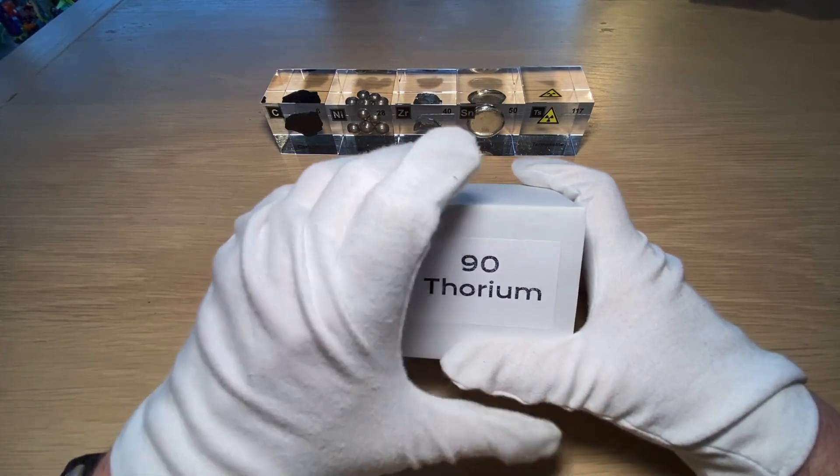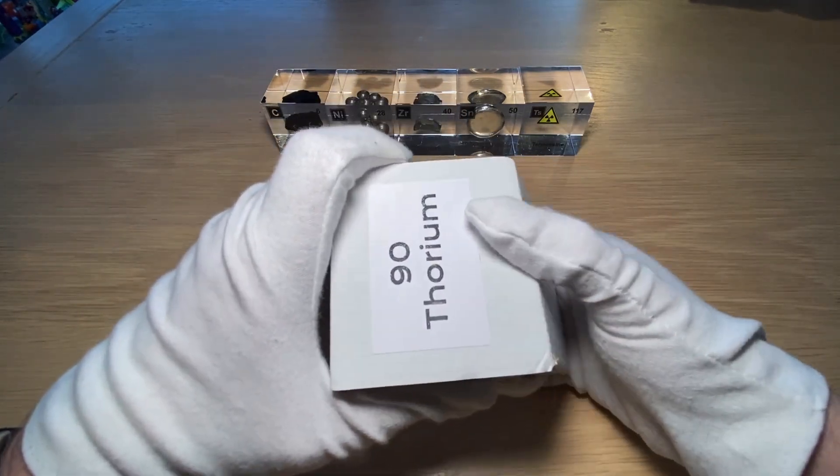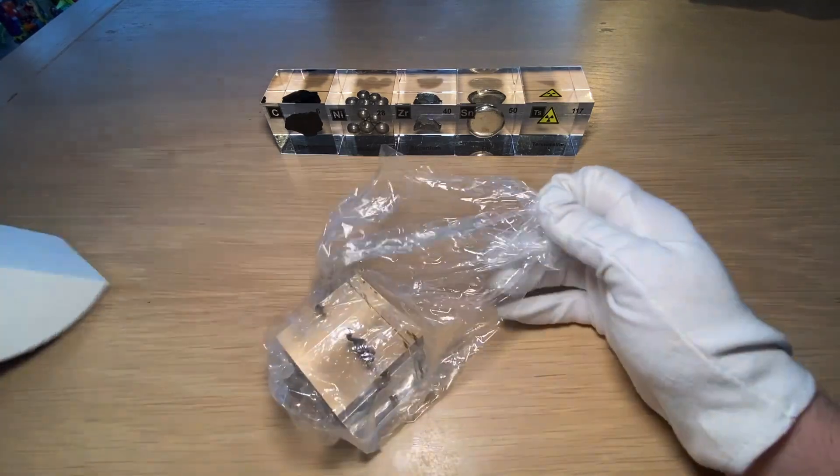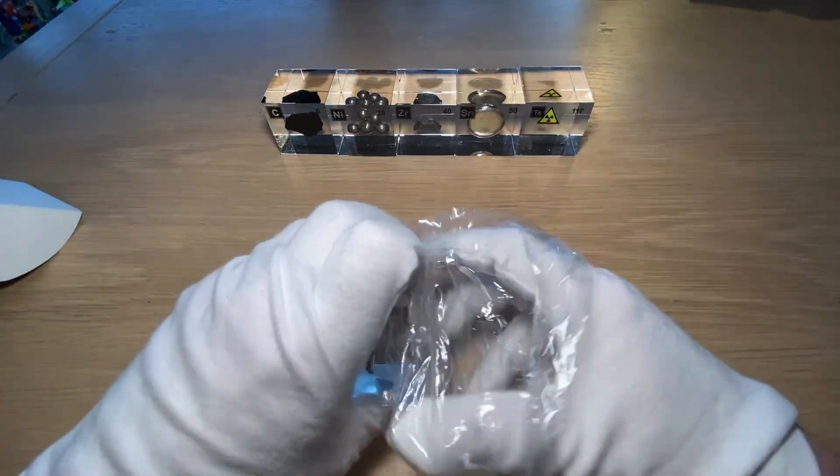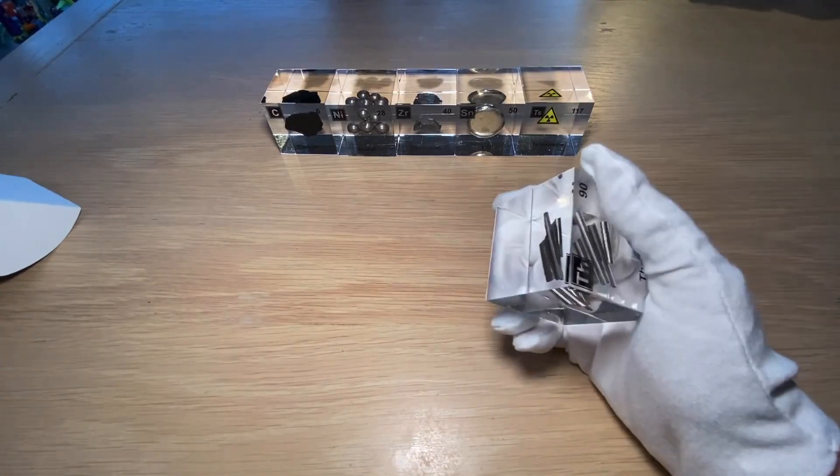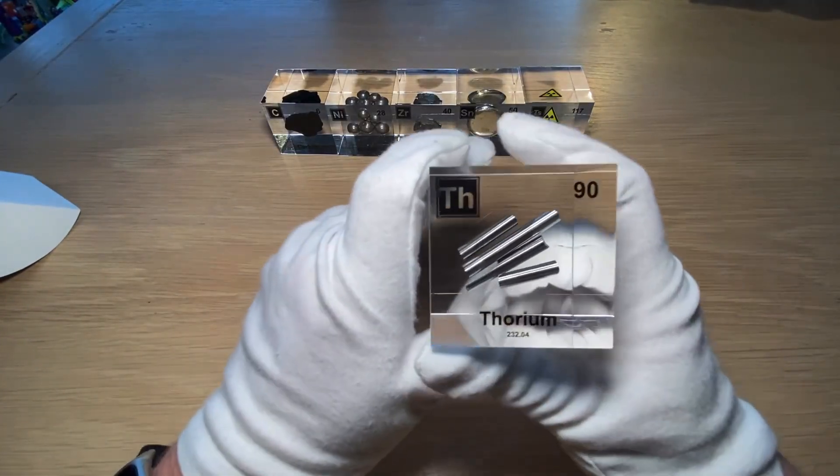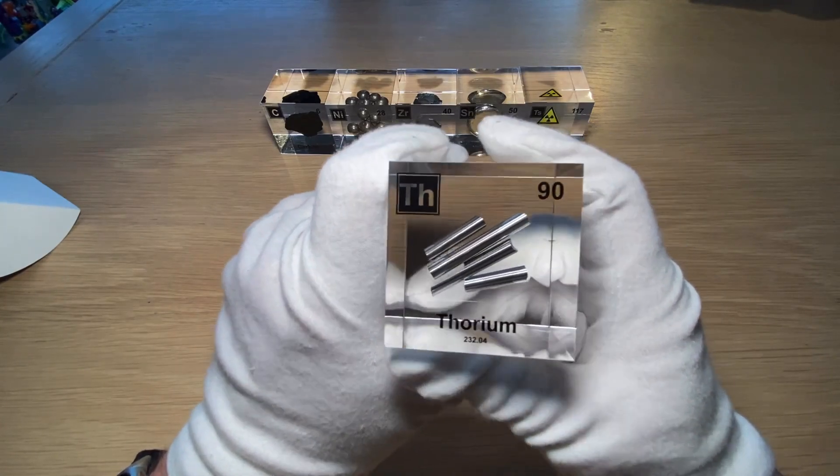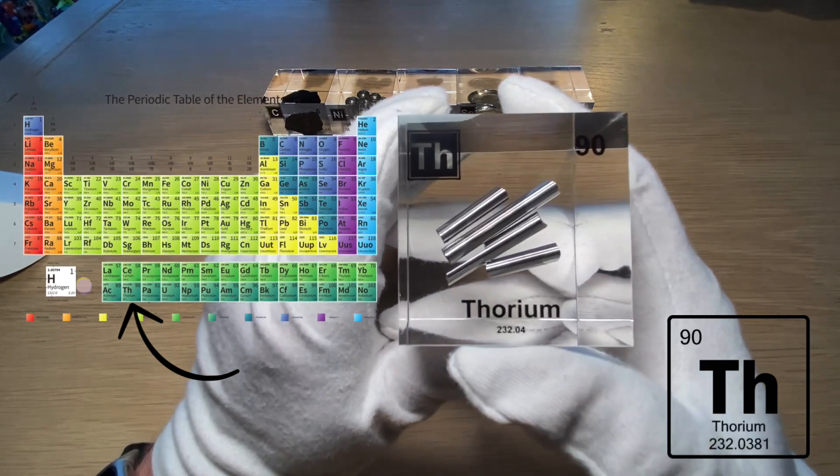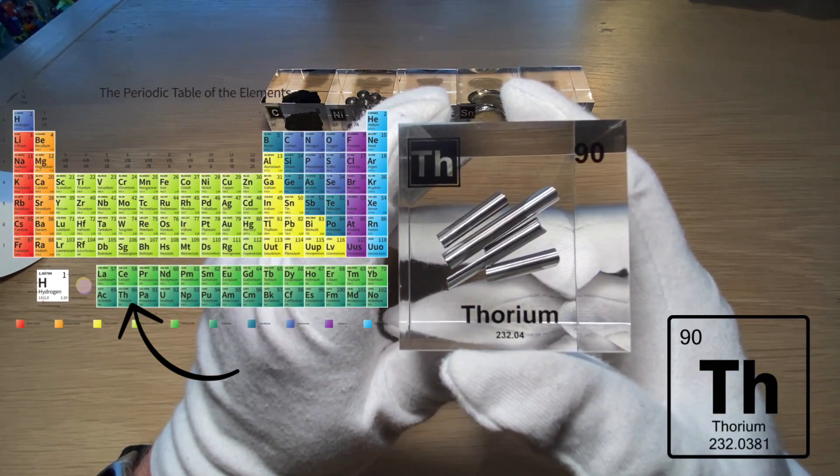And for now we're going to dig into what thorium actually is. So it's element number 90 in the periodic system. We got a beautiful block here. It's acrylic again, thanks to the guys of Engineered Labs. TH, it's element number 90. It is thorium and it has an atomic mass of 232.04.